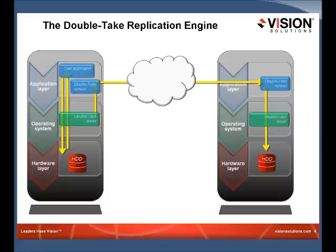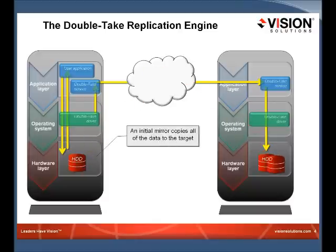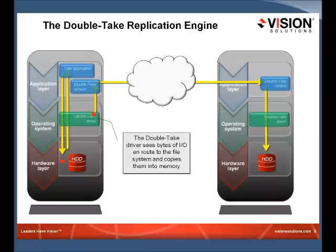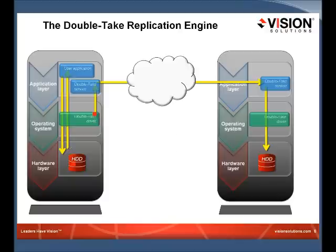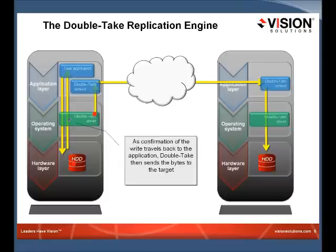You need to do an initial copy of that data set over to the target server — what we call a mirror. Once you've established that replica on the target server, you'll see how real-time replication works. As I/O comes down through the stack, the file system filter driver looks for modification ops. If you're just reading from disk, we don't care. But if the op is a modification op changing data in that replication set, we key off of that and replicate that particular op while allowing the original modification op to go down to the file system. Once written, the acknowledgement indicates a change to the disk.